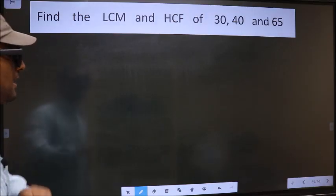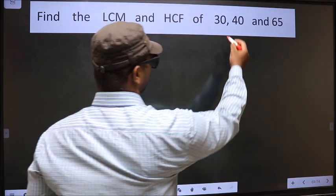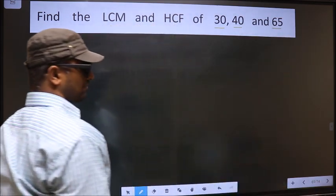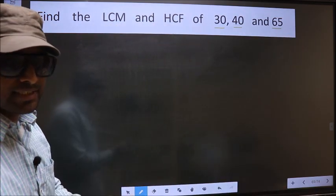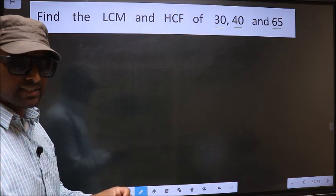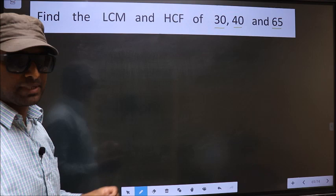Find the LCM and HCF of 30, 40 and 65. To find the HCF and LCM, first we should do the prime factorization of each number separately.